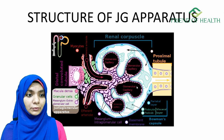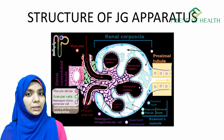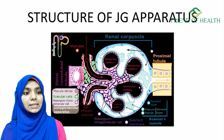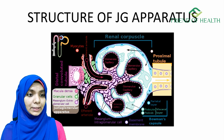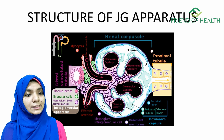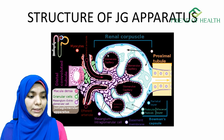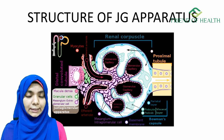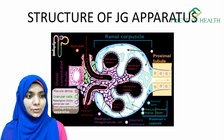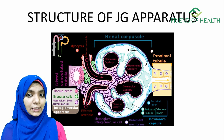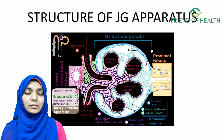Now let me discuss the glomerular capillary. This glomerular capillary is almost similar to other capillaries except for three things which are very peculiar to it. These three things include an endothelium, then a basement membrane, and also a layer of epithelium.